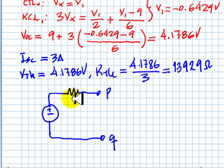RTh is 1.393 ohms, and rounding up, VTh is 4.179 volts. And that is our Thevenin equivalent circuit.